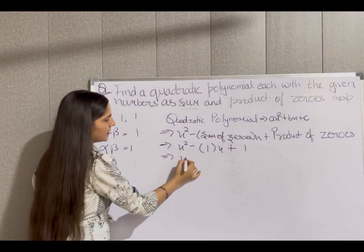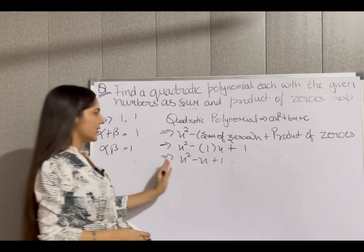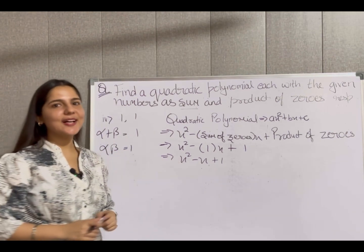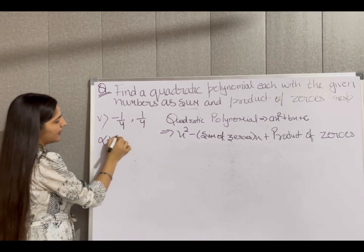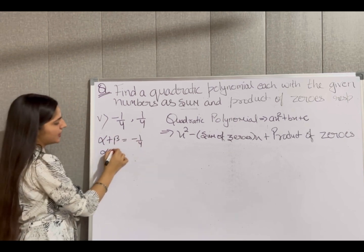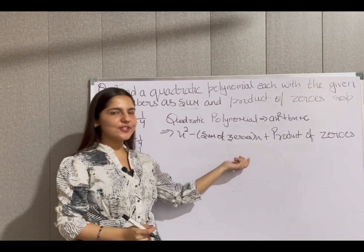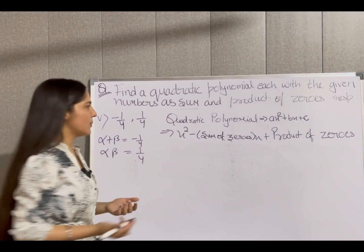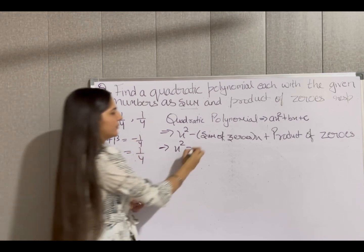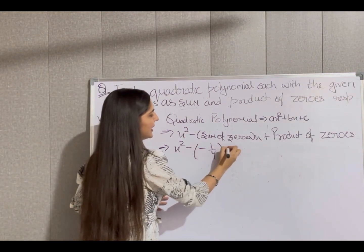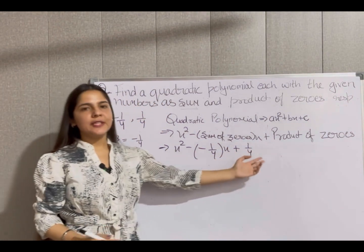For the next part (1/4): sum of zeros is -1/4 and product of zeros is 1/4. Putting values into the formula x² - (sum)·x + (product), we get x² - (-1/4)x + 1/4, which becomes x² + (1/4)x + 1/4.